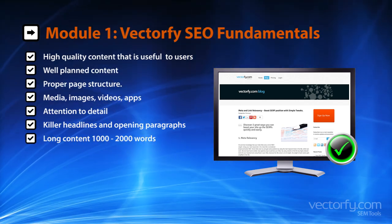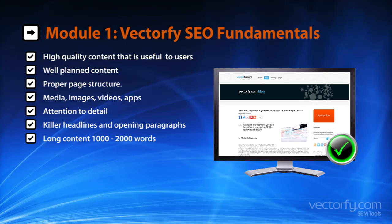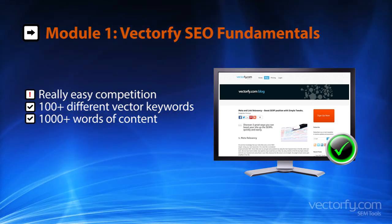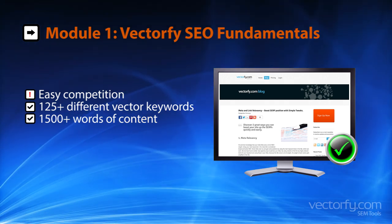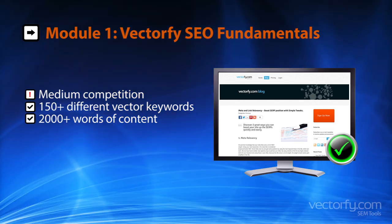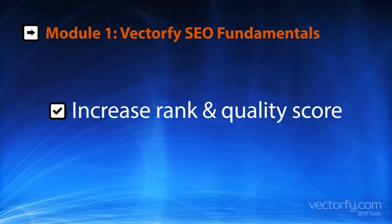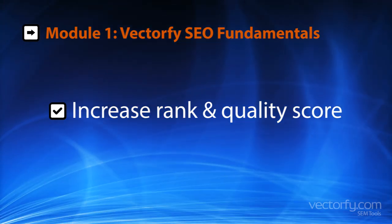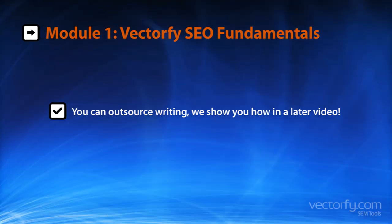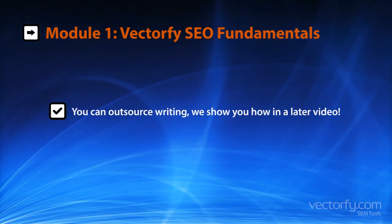7. Content length. The more you write, the more it looks like you know about the subject and have taken more time to cover everything a user might need to know. We highly recommend these content lengths: 1,000 words with 100+ different vector keywords for really easy niches; 1,500 words with 125+ vector keywords for medium niches; 2,000 words with 300+ vector keywords for tough niches. The more vector keywords you can use while maintaining integrity, the better you will rank. If you're not good at writing, see the outsourcing module video — content can be outsourced for as little as $15 for 1,000 words.